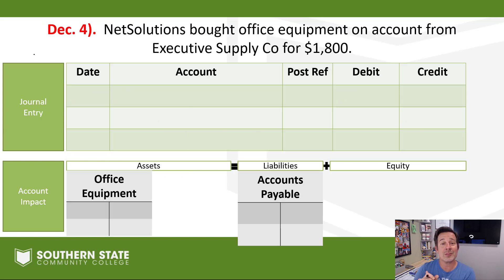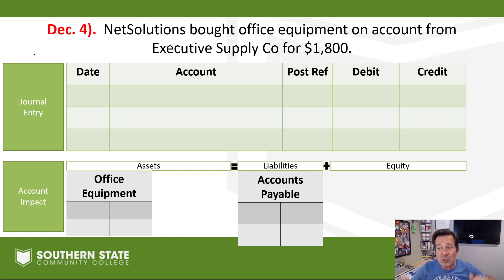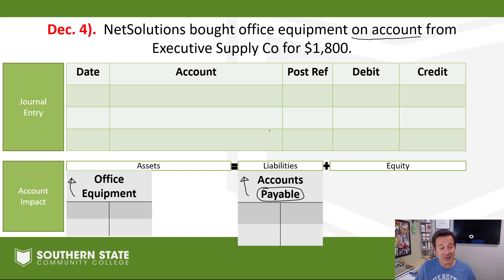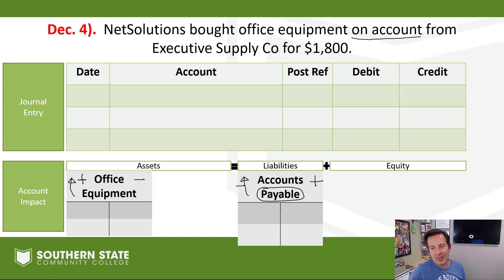Moving right along — December 4th. NetSolutions bought office equipment on account from Executive Supply Companies. Office equipment is an asset — think furniture, computer, telephone, copying machine. We bought it on account, meaning we didn't pay cash; we'll pay later. Buy now, pay later — that's an accounts payable. Anytime you see the word 'payable,' that means you owe somebody money. Office equipment needs to go up; accounts payable needs to go up. Left-hand side goes up on the left; right-hand side goes up on the right for a liability. The entry is a debit to office equipment for $1,800 and a credit to accounts payable.